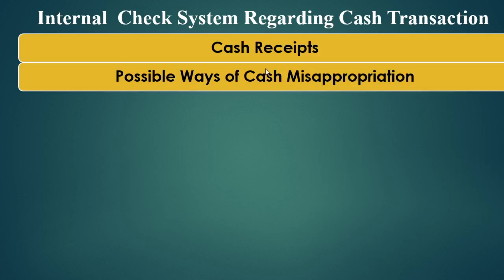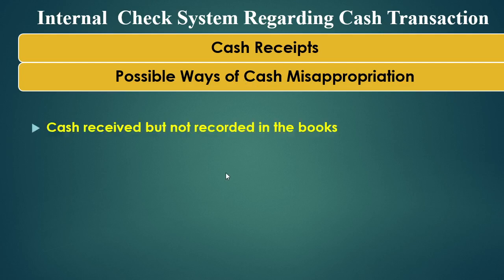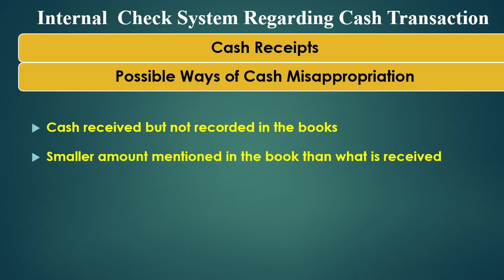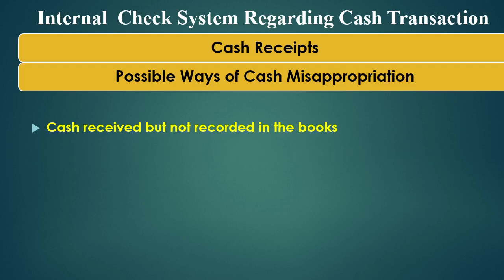The first one is cash receipts. In case of cash receipts, the possible ways of cash misappropriation — how can a cashier misappropriate the cash? It is important to know these ways, otherwise we cannot check these kinds of things. The first way is cash received but not recorded in the books. For example, 500 rupees received for sales, 500 rupees received as honorarium, or 5,000 rupees received as a donation — but none of it recorded in the books. This means the entire amount goes to the cashier's personal pocket and not to the company.